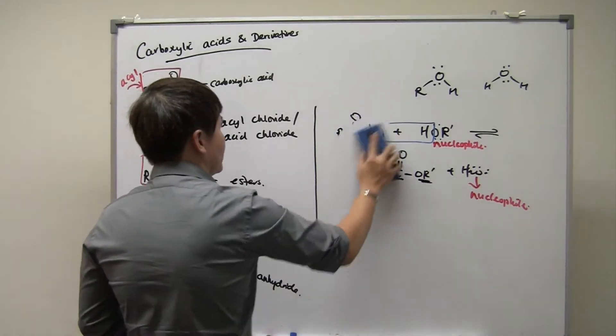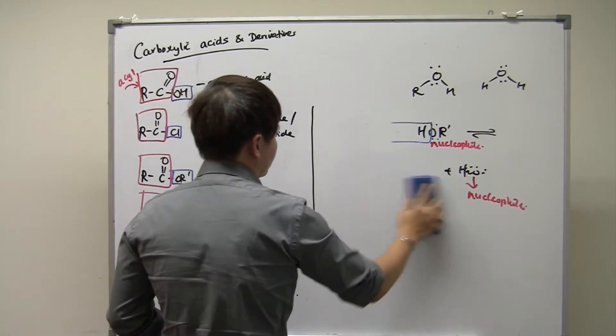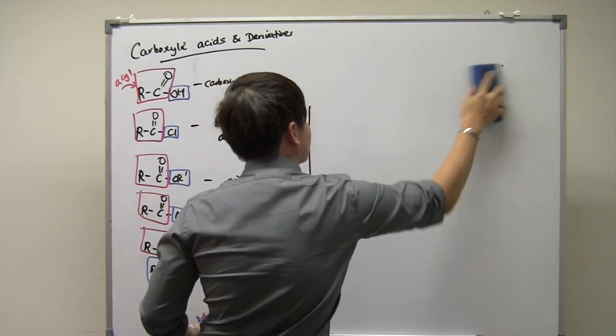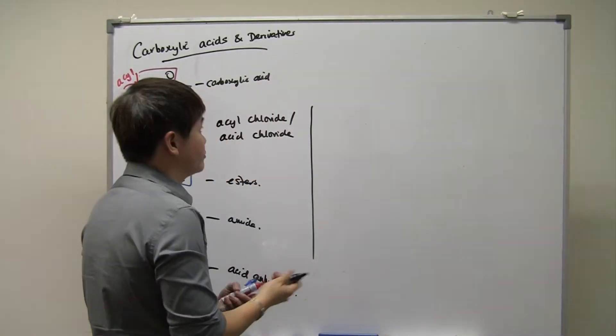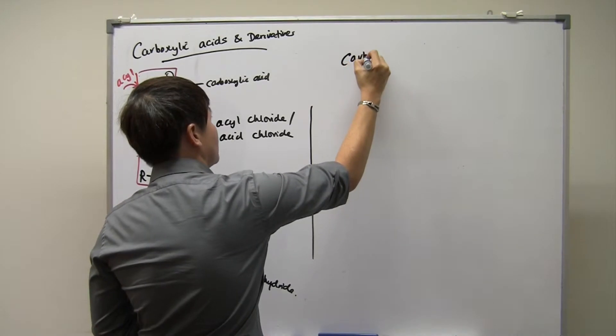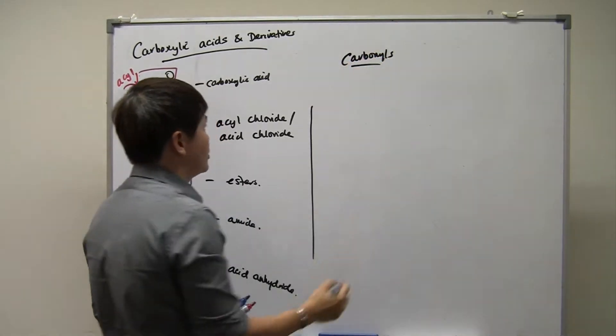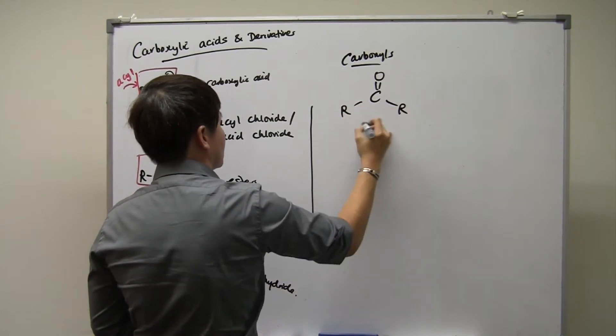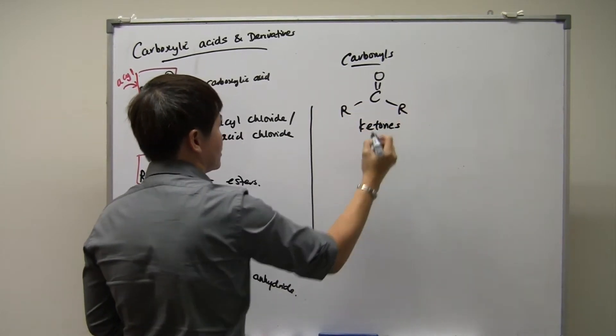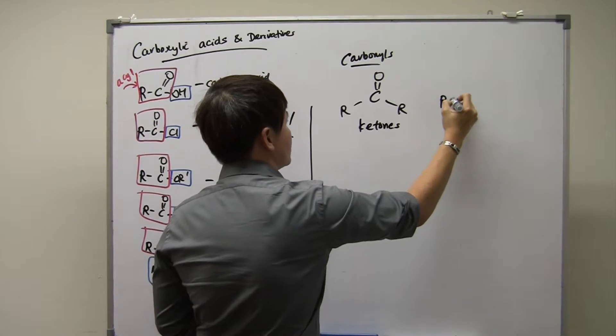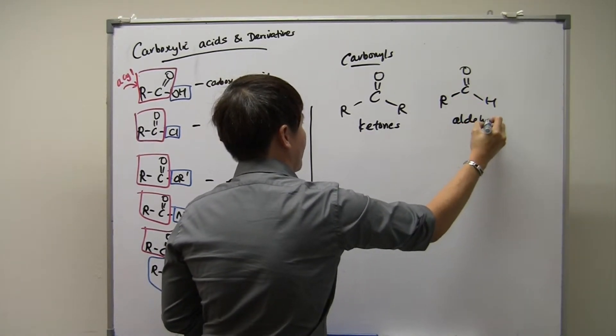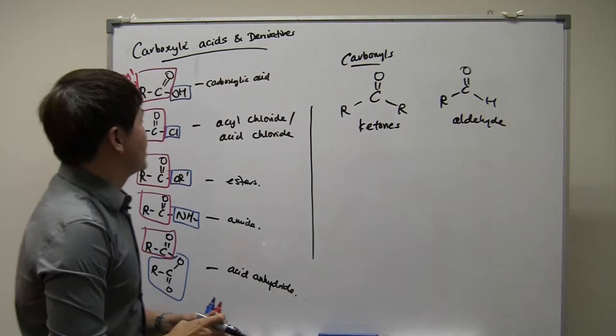Now, if you were to look at the chapter that's before this chapter, the chapter that's usually taught in schools before this chapter, is the carbonyl chapter. Carbonyls are normally taught before this acids and derivatives chapter. You will notice that carbonyls are two different kinds. One is called the ketones. You replace at least one of the R's into a H. This is called aldehyde.